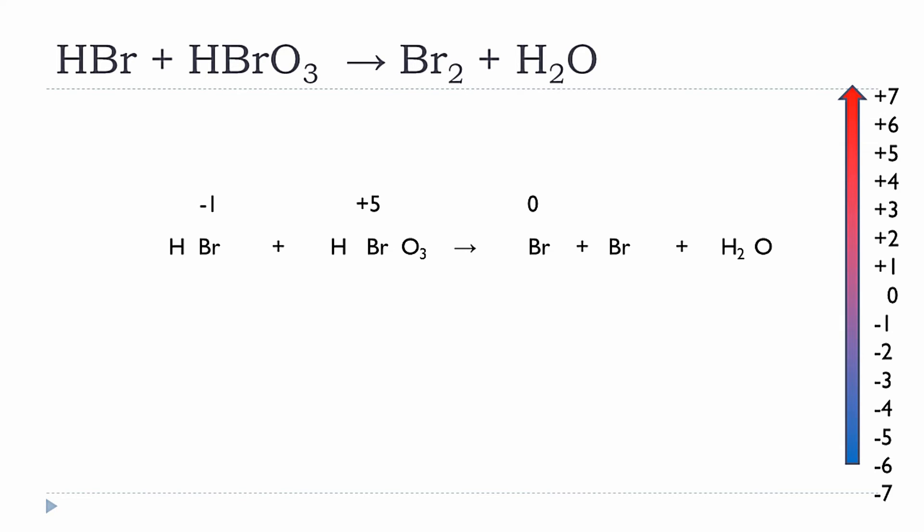On the product side, both bromine atoms have an oxidation number of zero because they are in the elemental state. Hydrogen and oxygen remain plus one and minus two respectively. Looking at Br from HBr: the oxidation number changes from minus one to zero, which is an increase in oxidation number.